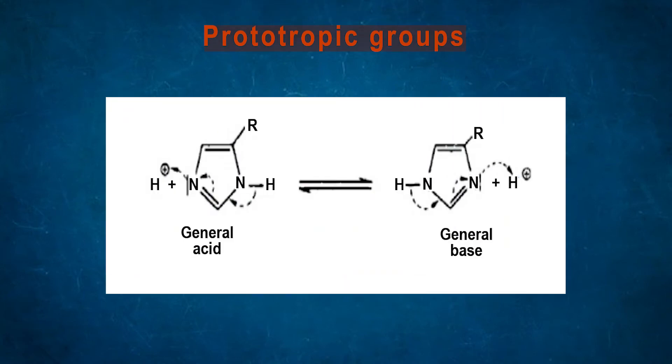The prototropic group is present in histidine, which acts as general acid or general base. The imidazole ring of histidine can simultaneously function as general acid and base. The conformation or orientation is mostly important during enzyme catalysis.